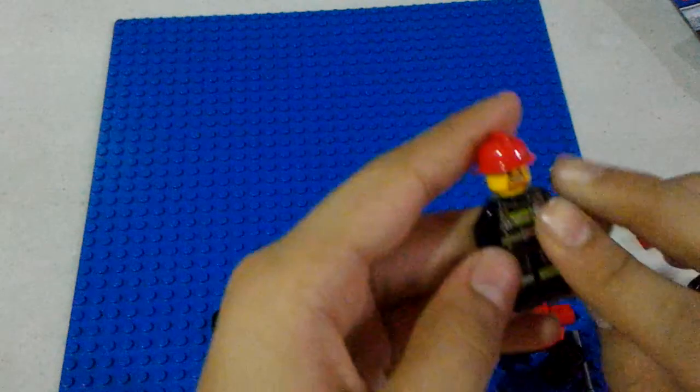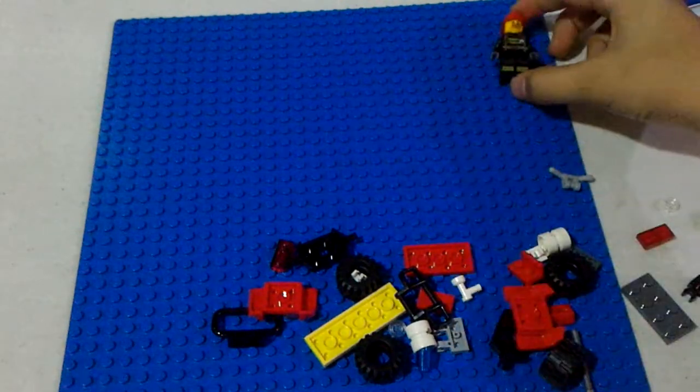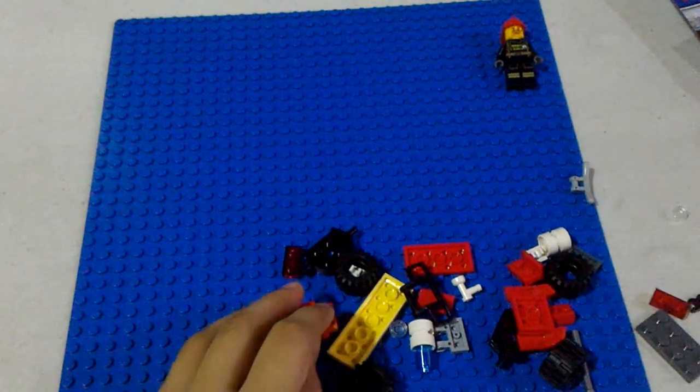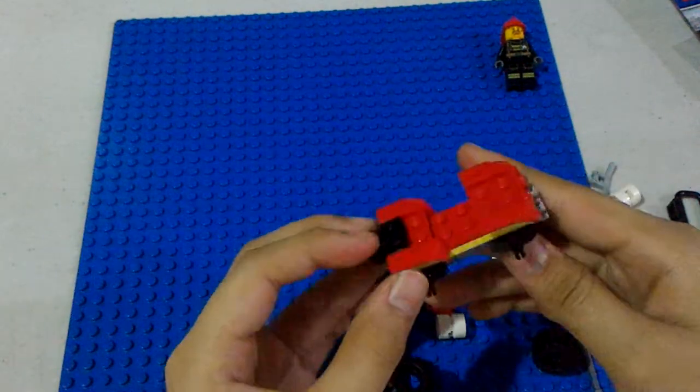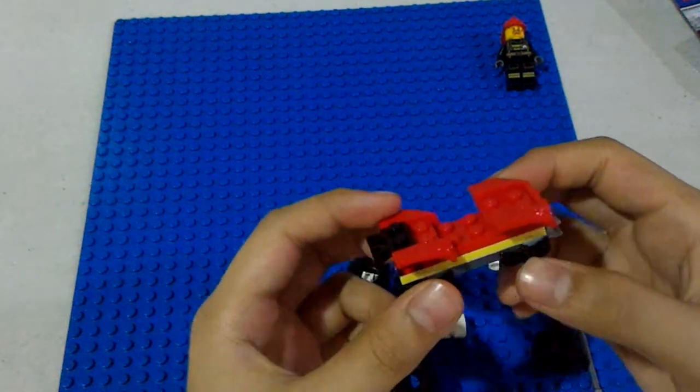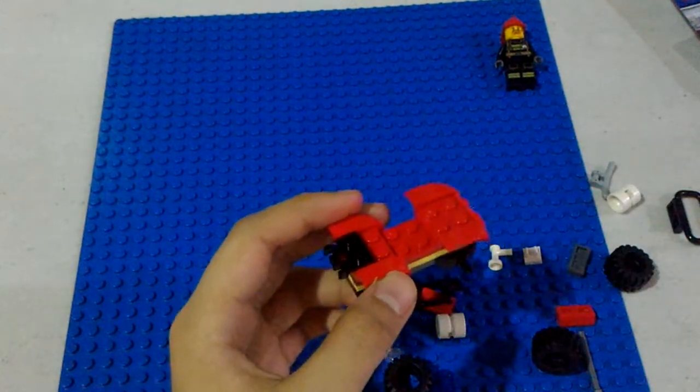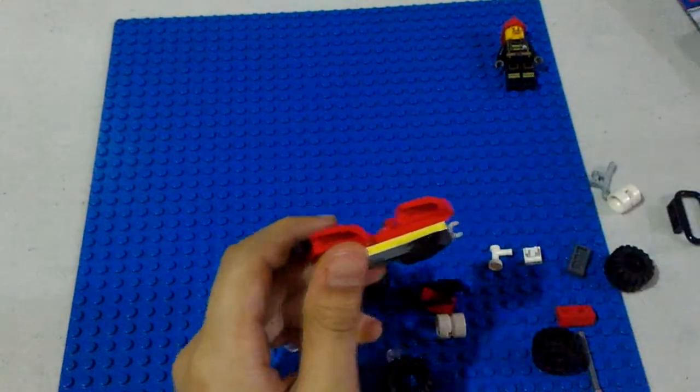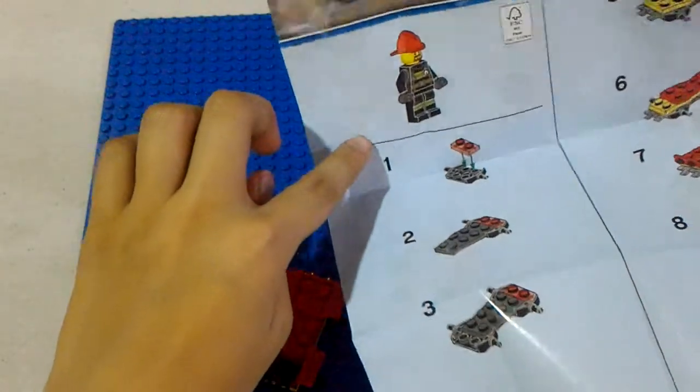Now here is the complete minifigure over here. Okay, so this is the outcome from steps one to nine.